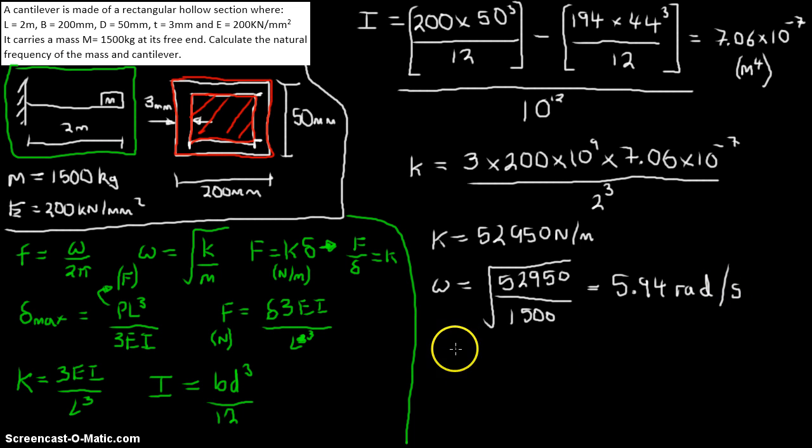And then, last step to work out our frequency would be our angular frequency that we just worked out, which is 5.94, divide that by 2 pi, and we'll get an answer of 0.95 hertz.